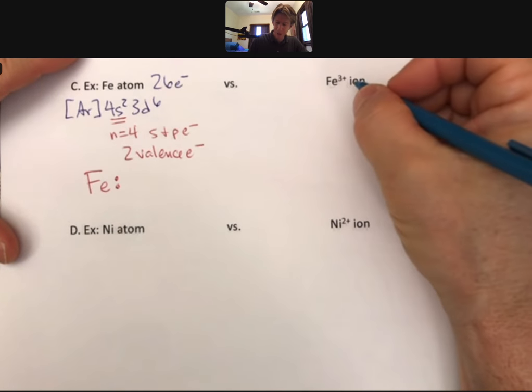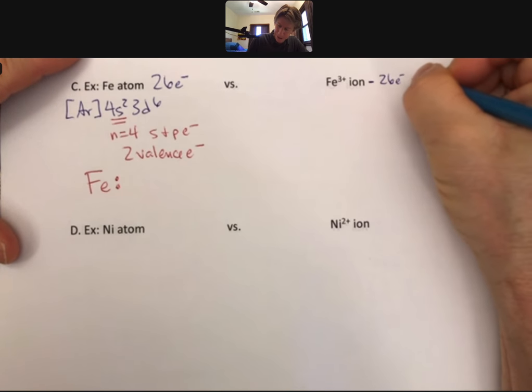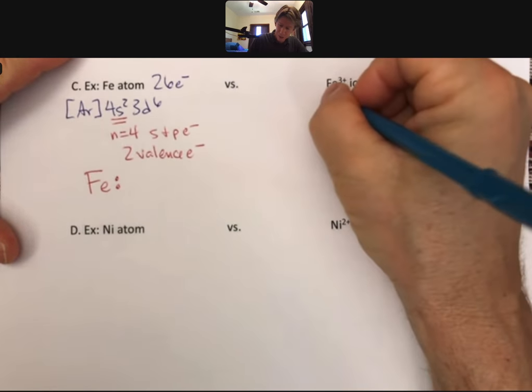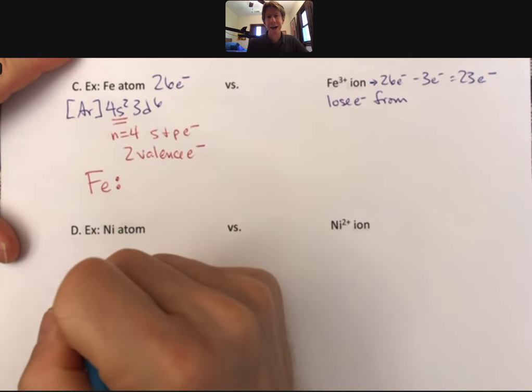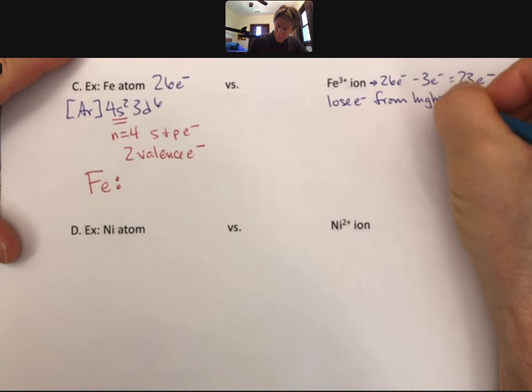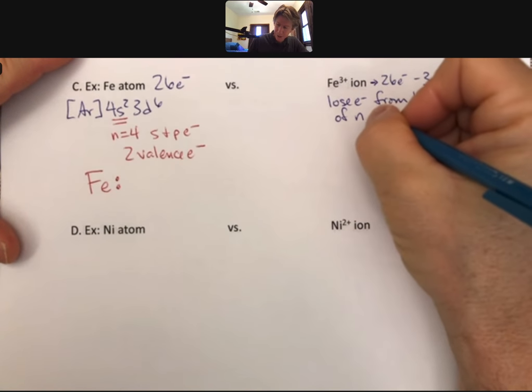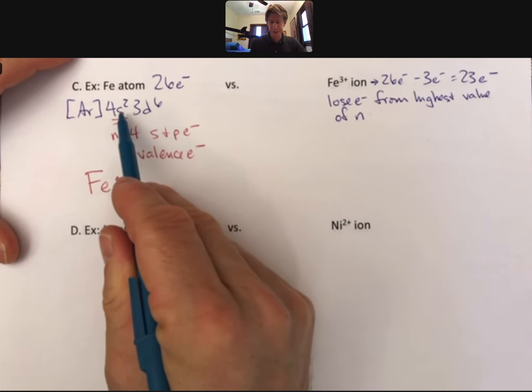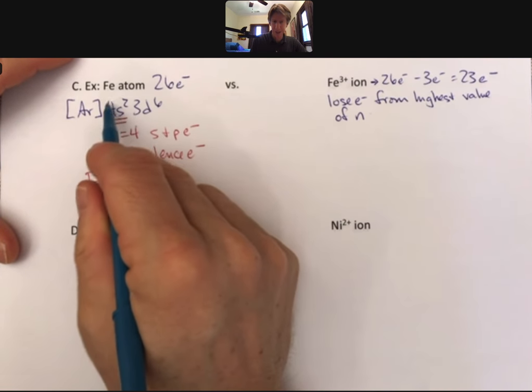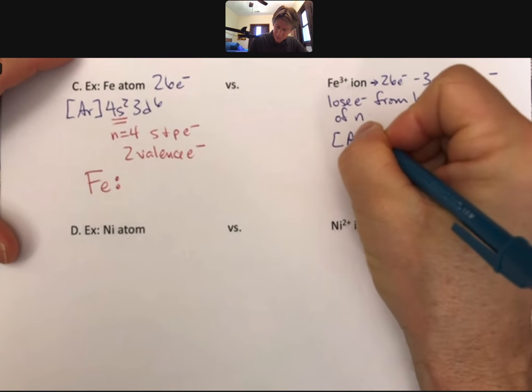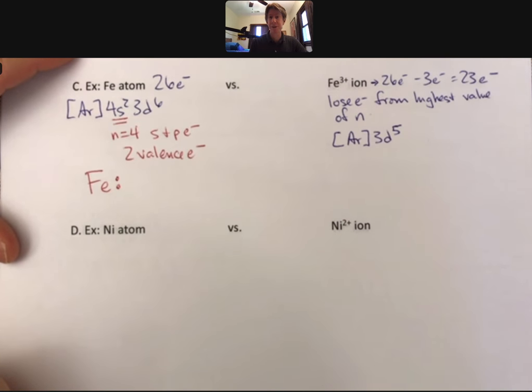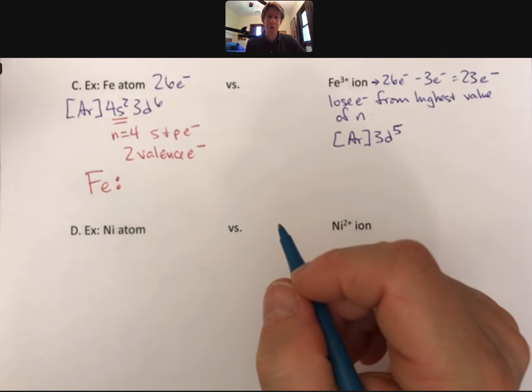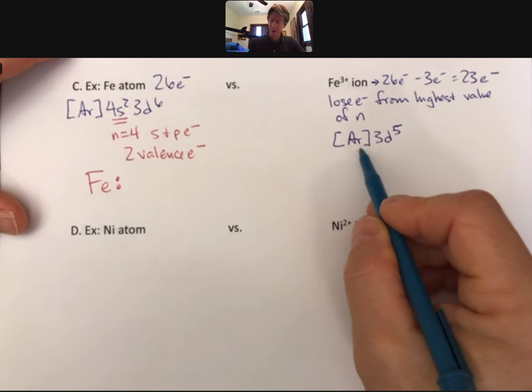Now let's do the Fe3+. Fe3+ is going to be 26 electrons minus 3 electrons, so we only have 23 electrons left. We lose electrons from the highest value of n. That's going to be n equals 4, so the first two electrons to leave are 4s2, not 3d6. We're going to lose two of these electrons and we're going to lose one of these electrons. The 4s2 just disappears because it's empty. It's still there, all the sublevels are there, they're just empty, so we don't have to write them.